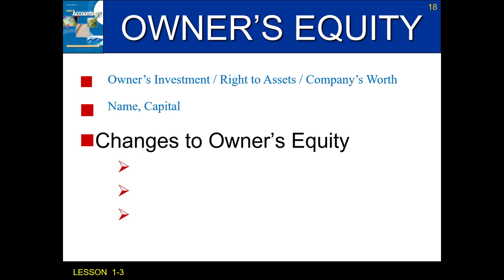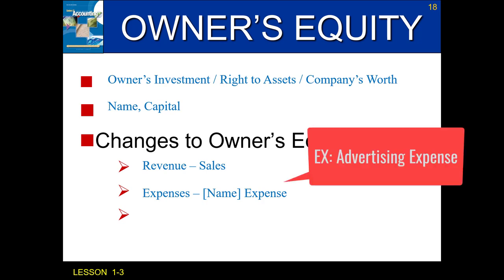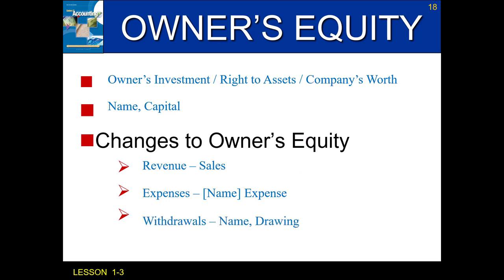We're going to break it down into three different things — three different changes to owner's equity. The first would be revenue, and the account title we're going to use is 'sales.' This will be the only type of revenue we have in accounting one. The second change would be an expense, with the account title being the name of whatever it is followed by 'expense' — for example, advertising expense or rent expense. The third change is a withdrawal, with the account title being 'name of the owner, comma, drawing.'